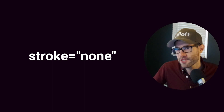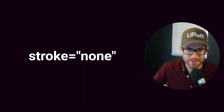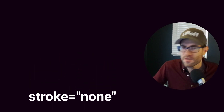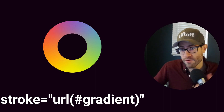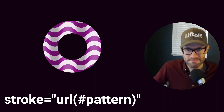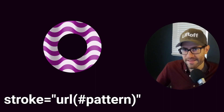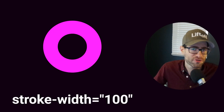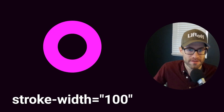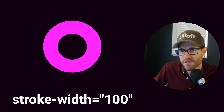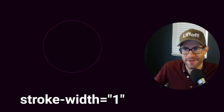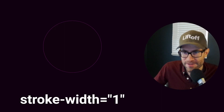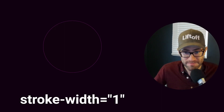The attribute determines the color of the stroke. Strokes can be a solid color, a gradient, or a pattern — exactly like the fill. The thickness of the stroke is controlled by the stroke-width attribute, which has a default value of one. It's pretty thin, so generally you're going to bump that up to make it more visible.